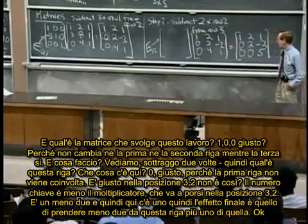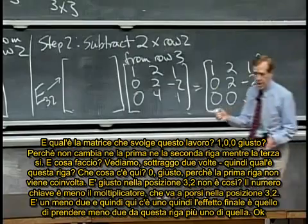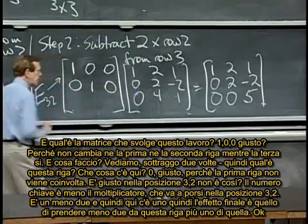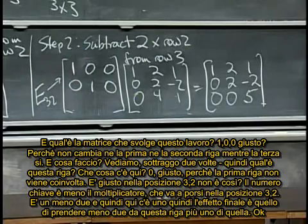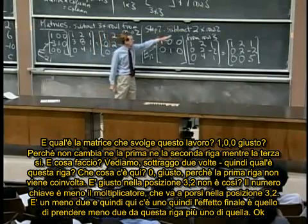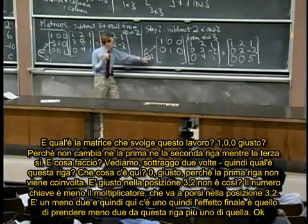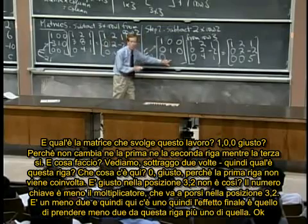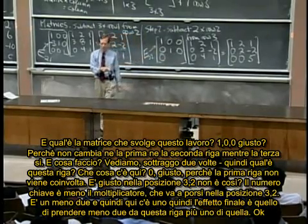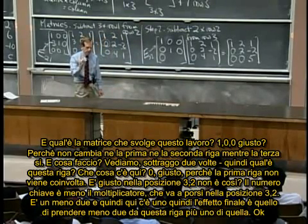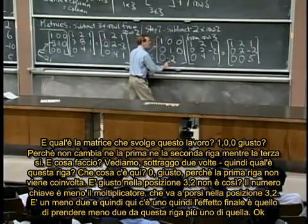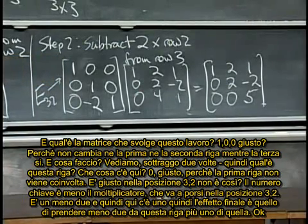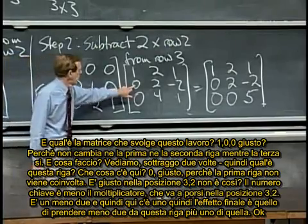What's the matrix that does that? One zero zero — because we don't change the first row. The next row we don't change either. The last row is the one we do change. I subtract two times, so the key number is the minus multiplier sitting in the three-two position: minus two there, and then a one, so the overall effect is to take minus two of row two plus one of row three.